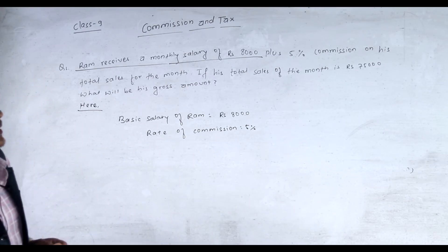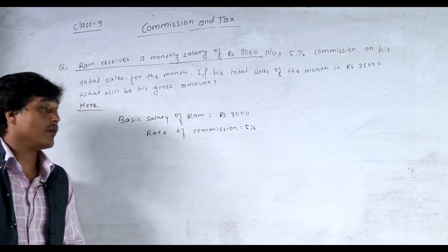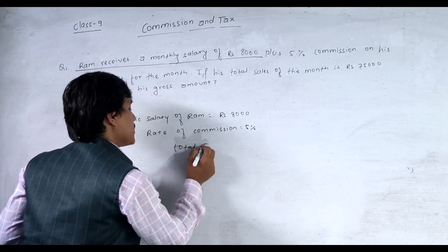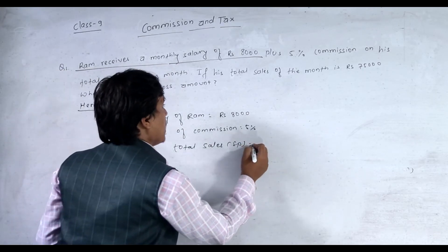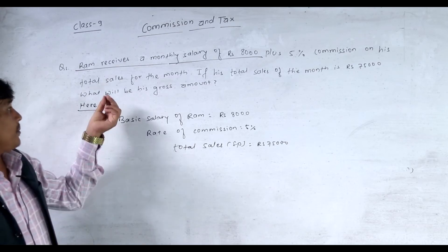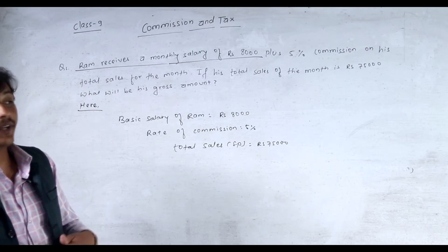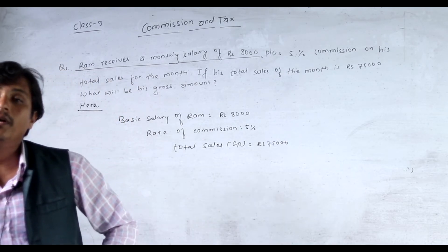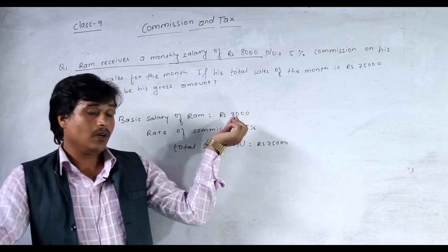Again read the question: if his total sales of the month is Rs 75000, what will be his gross amount? So here, total sales (SP) of Ram in that particular month is Rs 75000. The main question is: what will be Ram's gross amount for that month? The commission will be a percentage of the total sales.